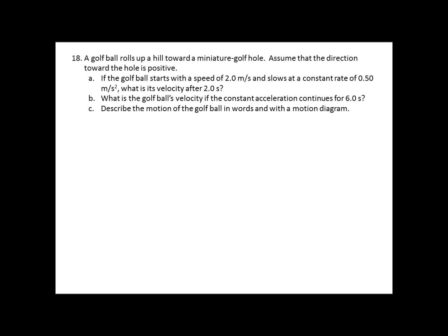In number 18 we have a golf ball that's rolling towards a miniature golf hole up a hill. It says assume that the direction towards the hole is positive. If the golf ball starts with a speed of 2.0 meters per second and slows at a constant rate of 0.50 meters per second squared, what is its velocity after 2 seconds? Then it asks what is the golf ball's velocity if the constant acceleration continues for 6 seconds? And finally, part C, describe the motion of the golf ball in words and with a motion diagram.